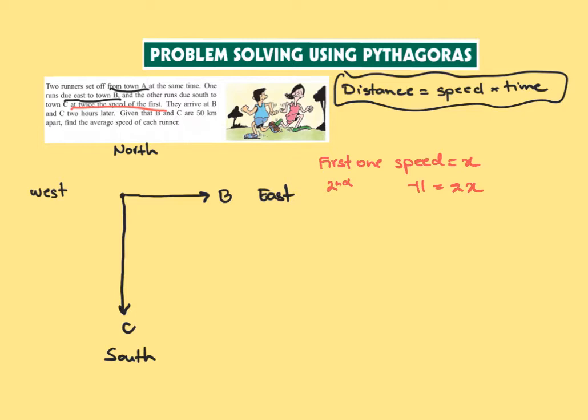However, so that's what we know, the speed. Now they arrive at B and C town two hours later, so two hours later. We want to see the distance that they have traveled. Distance is speed times time, so they are running from here from this point to B, so the speed is x but they are running for two hours, so it's two times x.